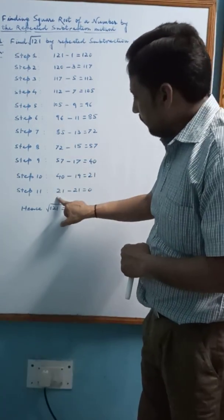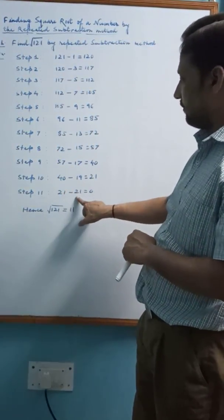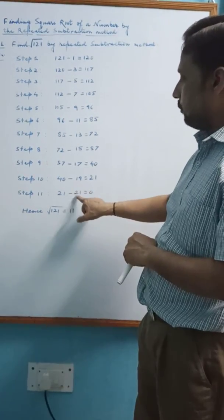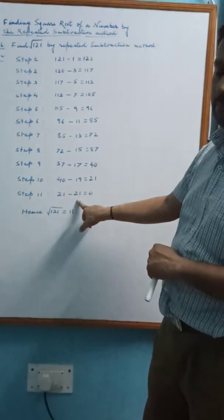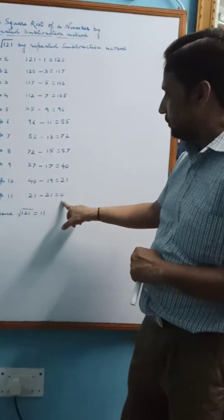And 21 is subtracted by the next odd number 21. And the answer is 0.